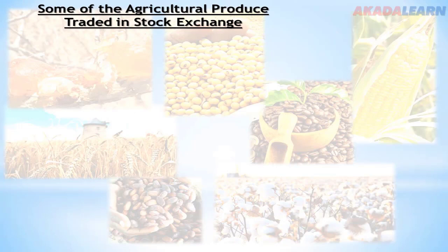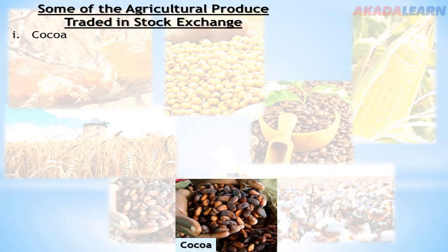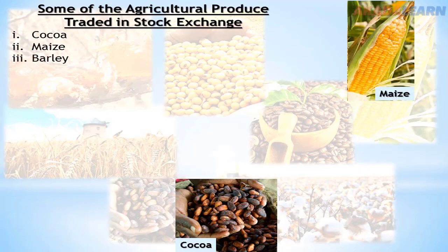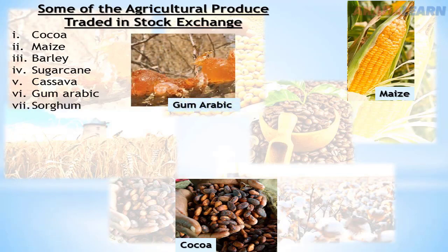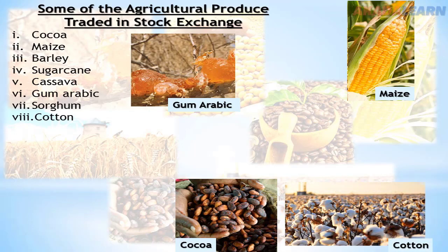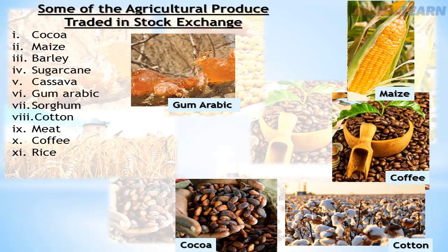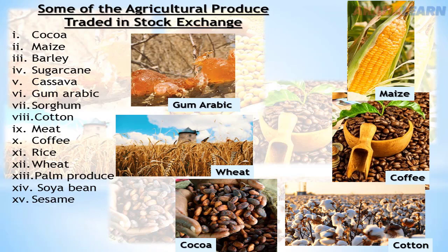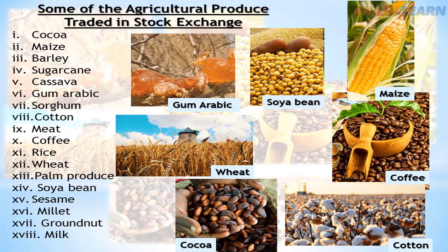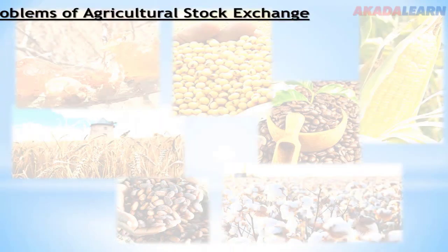Some agricultural produce traded in stock exchange: we have cocoa, maize, barley, sugar cane, cassava, gum arabic, sorghum, cotton, meat, coffee, rice, wheat, palm produce, soya beans, sesame, millet, groundnut, and milk.